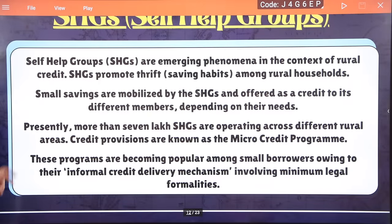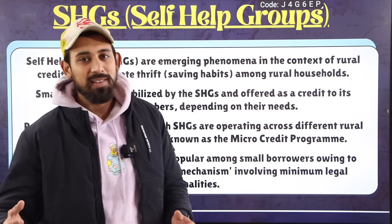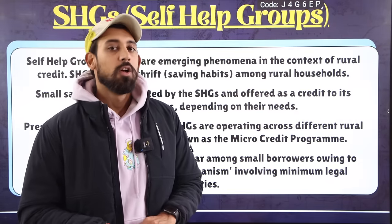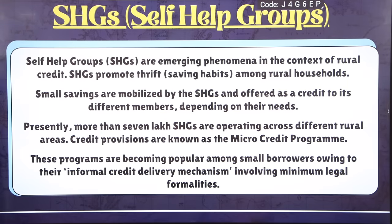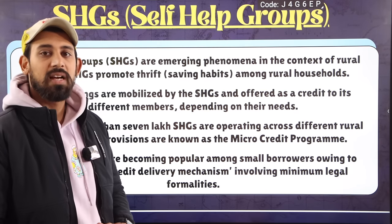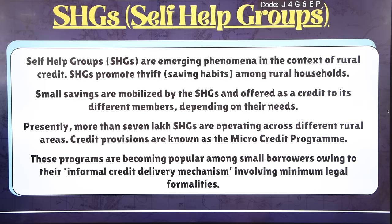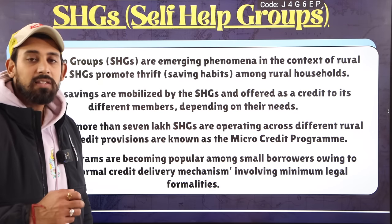Self-Help Groups (SHGs) are groups where farmers come together to pool resources and solve financial problems collectively. SHGs are an emerging phenomenon in rural credit. They promote thrift — savings among rural households. Small savings are mobilized through SHGs and offered as credit to members based on their needs. Currently, more than 7 lakh SHGs are operating in our country.